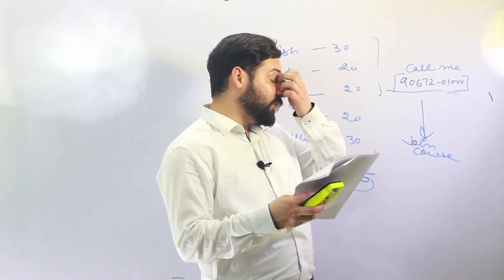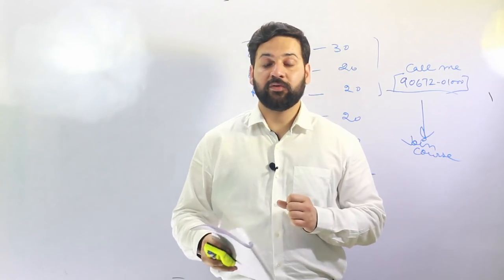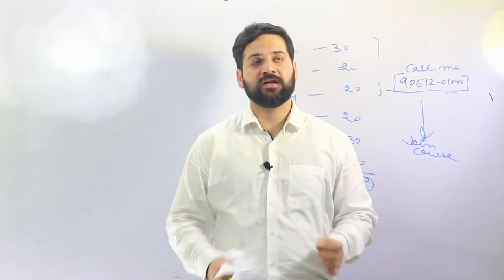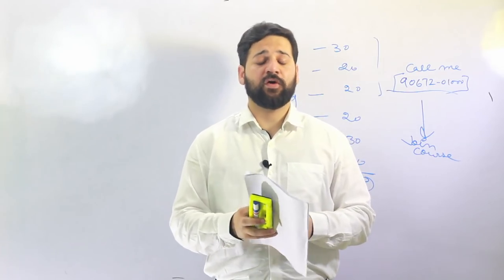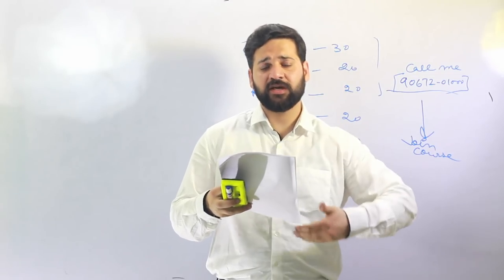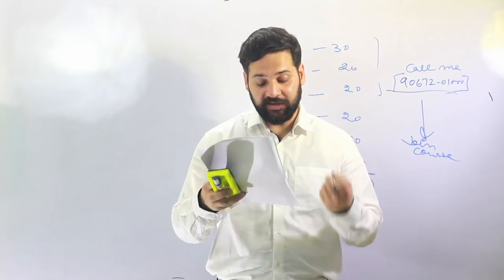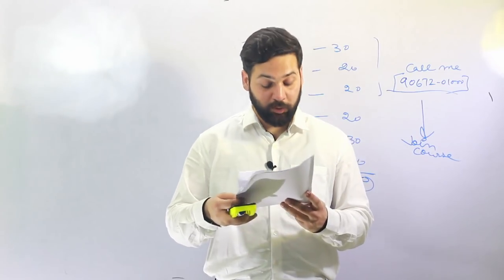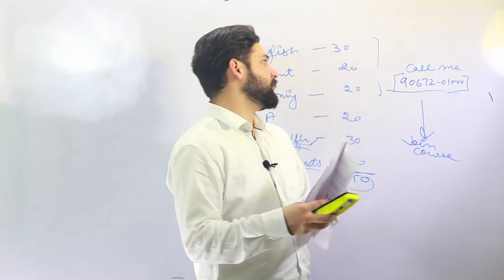In the quantitative aptitude section, you are going to find one data interpretation set of five marks, followed by questions related to simplification, time and work, number series, averages, time and distance, profit and loss, simple and compound interest, and partnership. A fairly easy section overall.